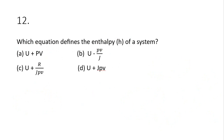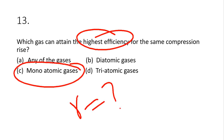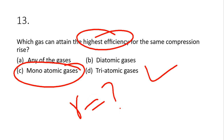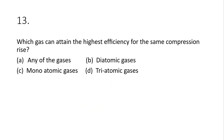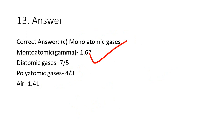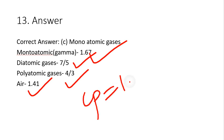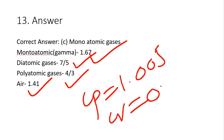Question 13: which gas attains the highest efficiency for the same compression ratio? The highest efficiency comes from the gas with the highest gamma value. Monoatomic gases have gamma = 1.67, diatomic gases have gamma = 7/5 = 1.4, and polyatomic gases have gamma = 4/3 ≈ 1.33. So monoatomic gases give the highest efficiency. For air: gamma = 1.41, Cp = 1.005 kJ/kg·K, Cv = 0.718 kJ/kg·K, and R = Cp − Cv = 287 J/kg·K.